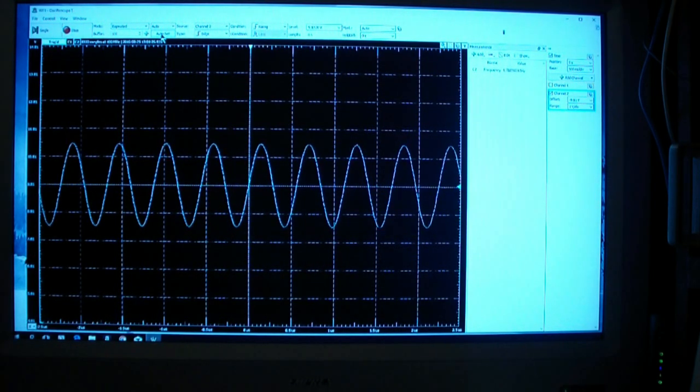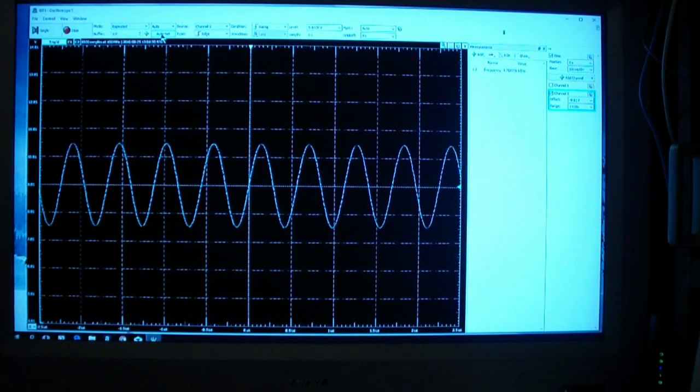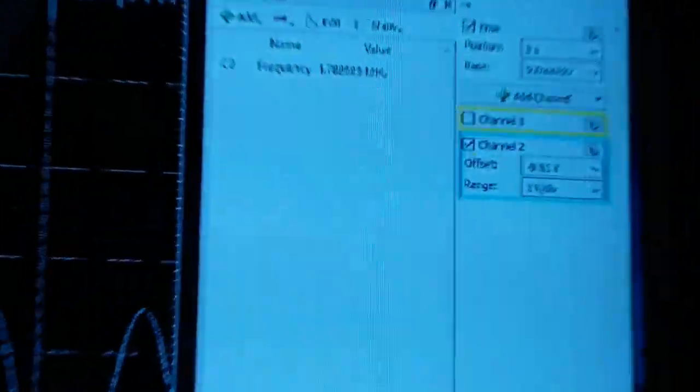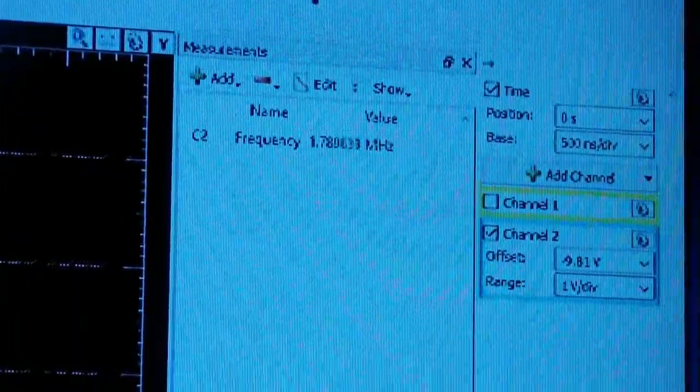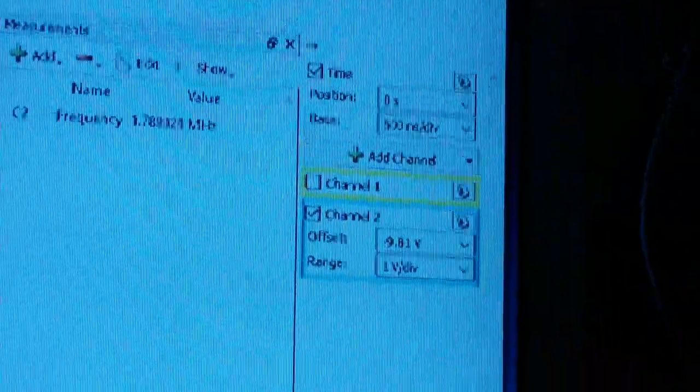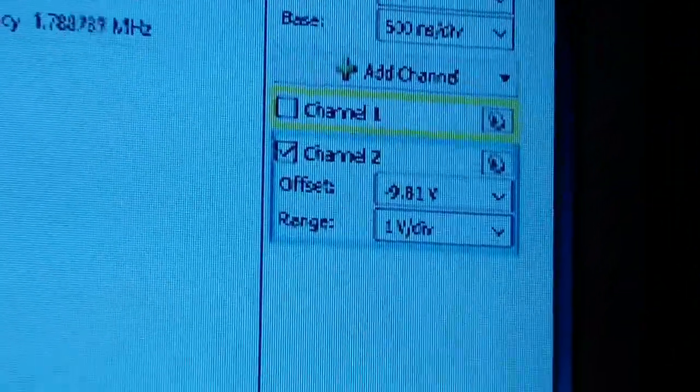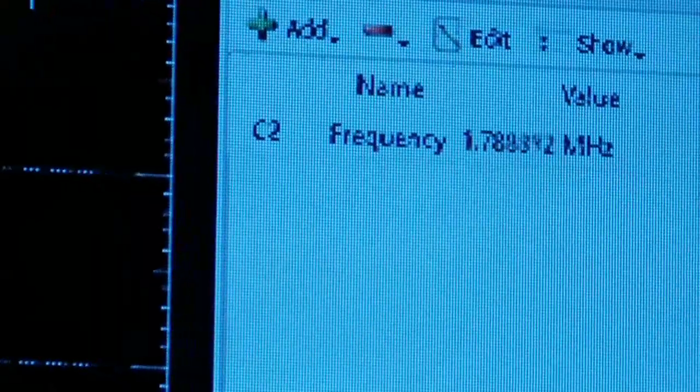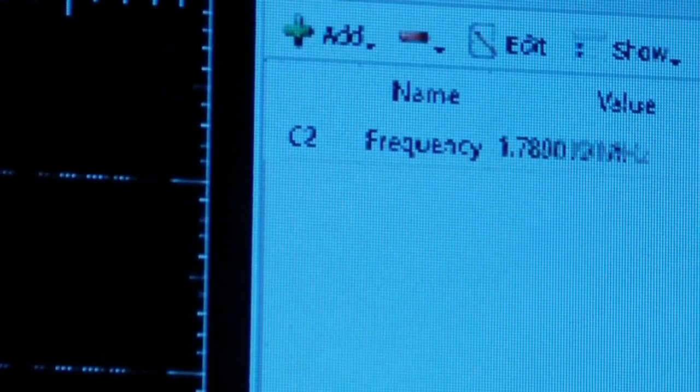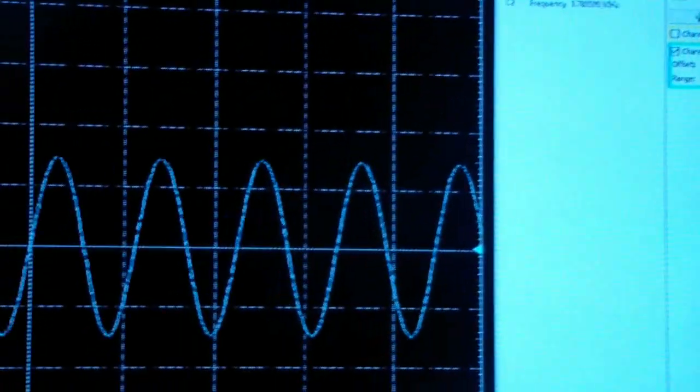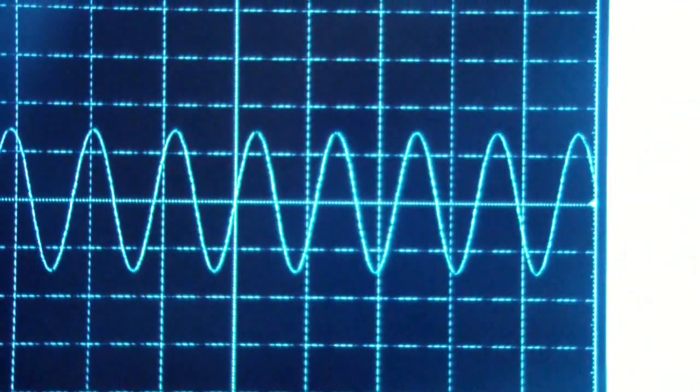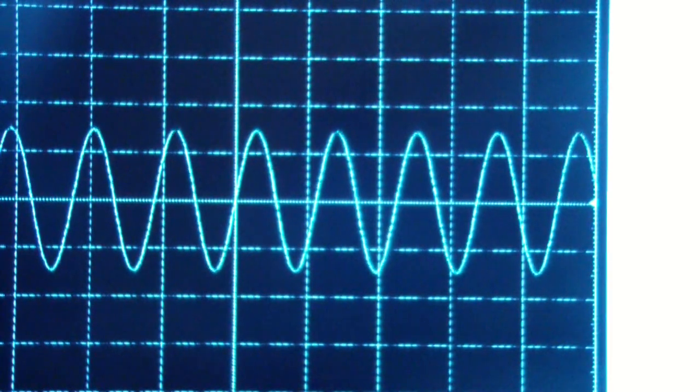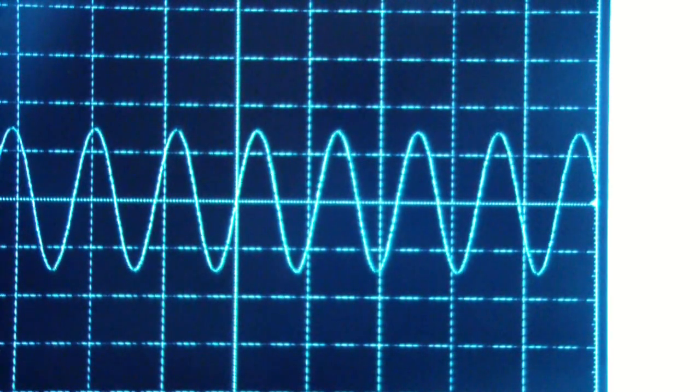And you see that we get an oscillation at a frequency of about 1.8 megahertz, and an amplitude - you see the amplitude of channel 2 is set to 1 volt per division. The frequency is about 1.78, 1.8 megahertz, roughly. And you see that we're getting about three divisions of amplitude, so about 3 volts of oscillator output.